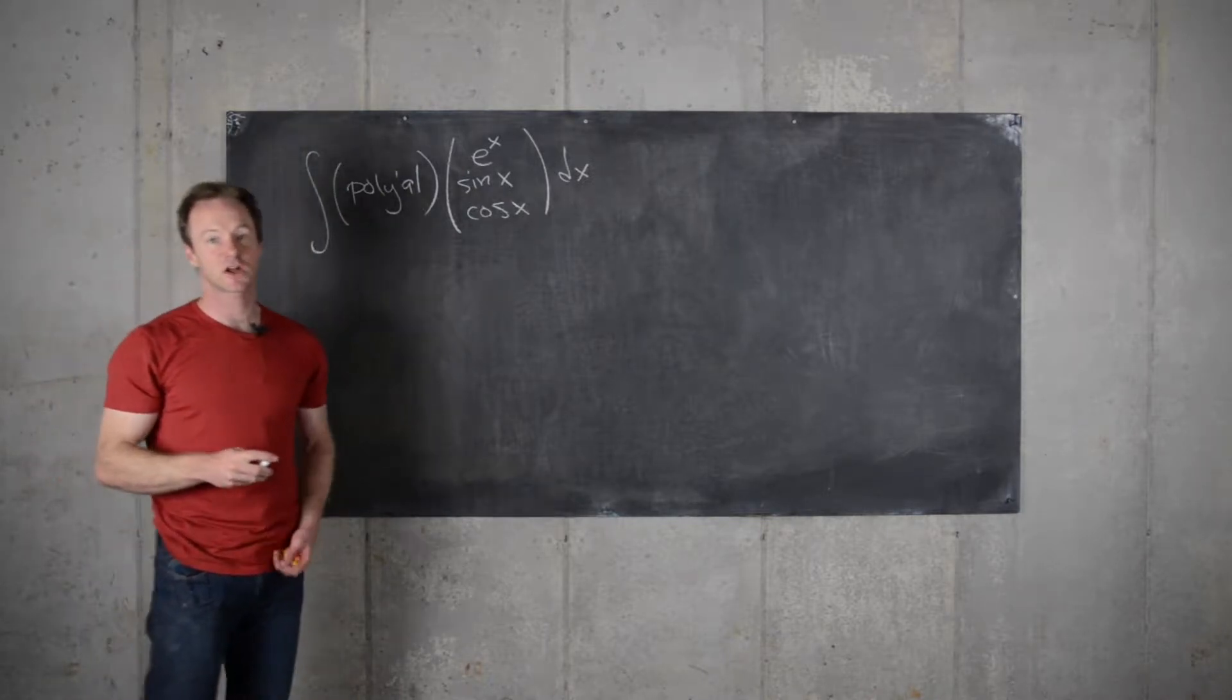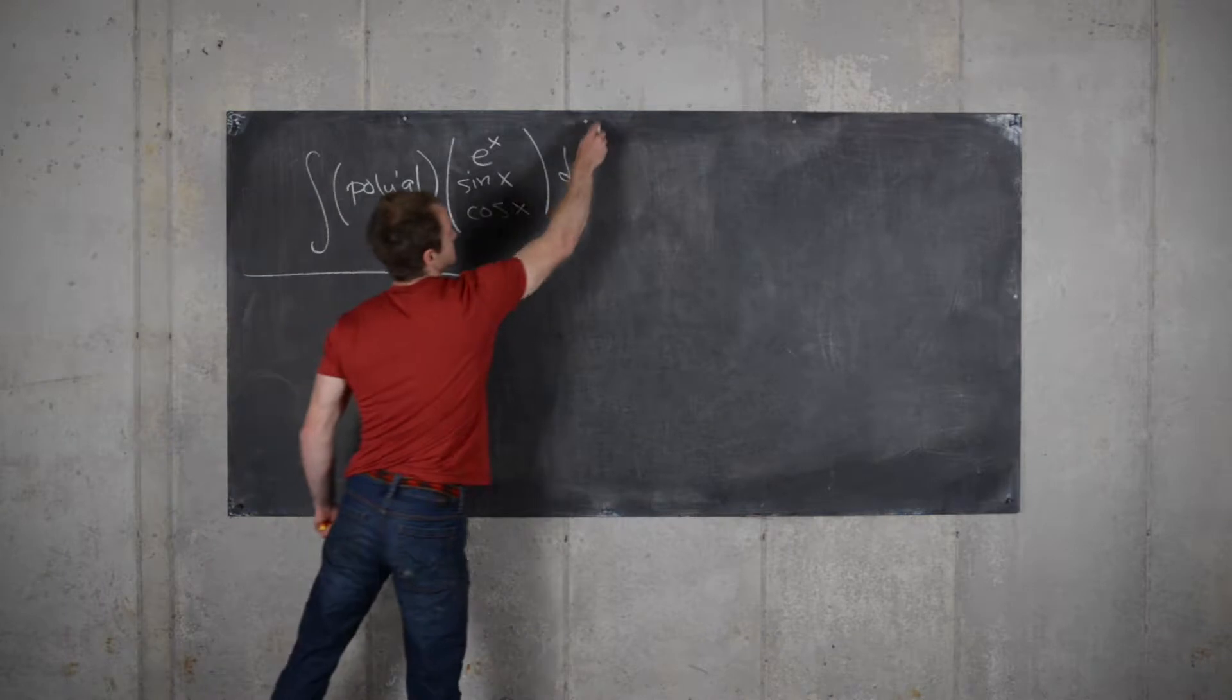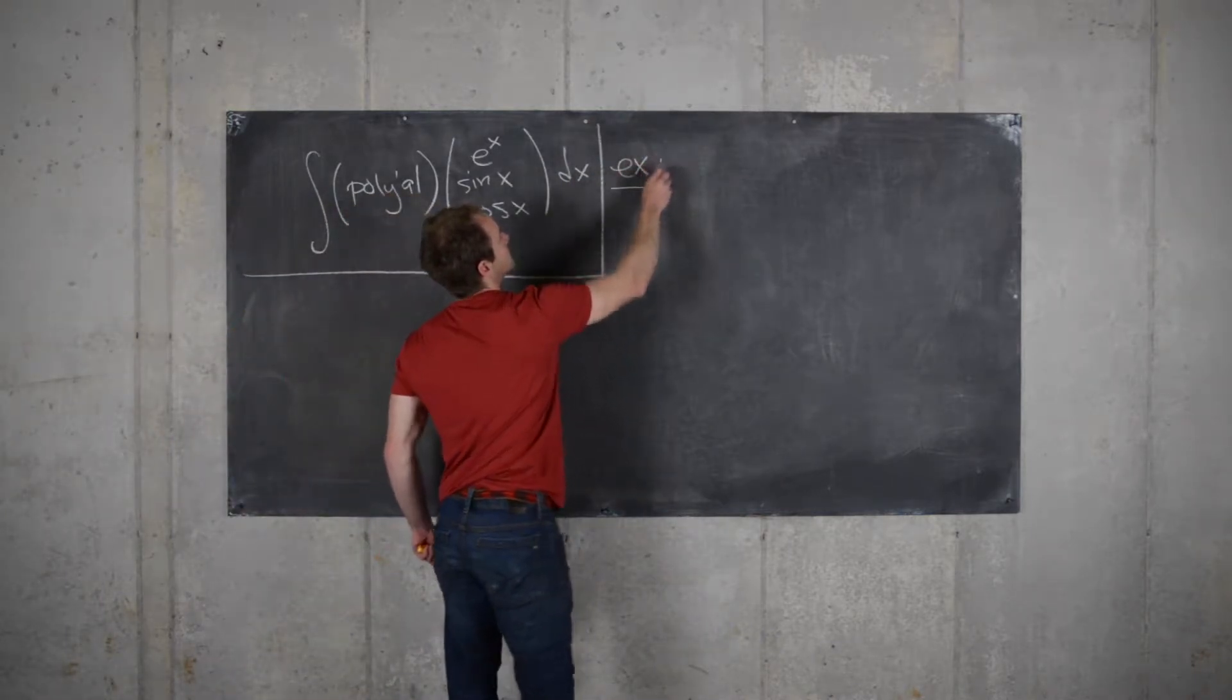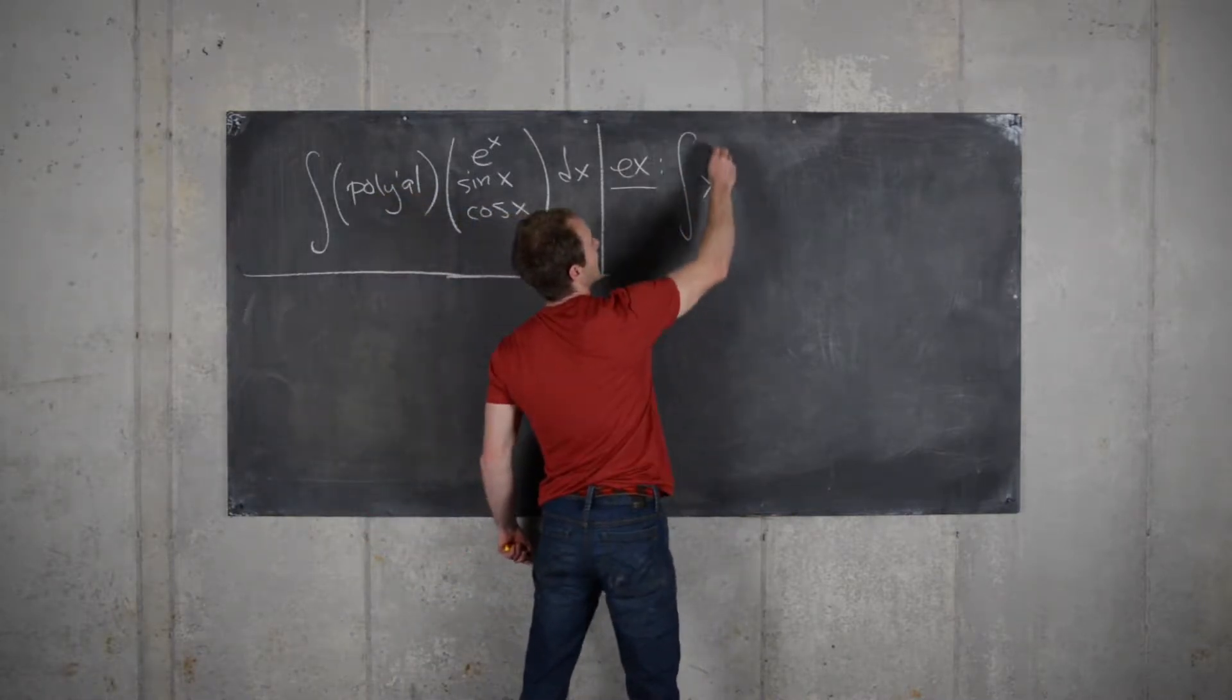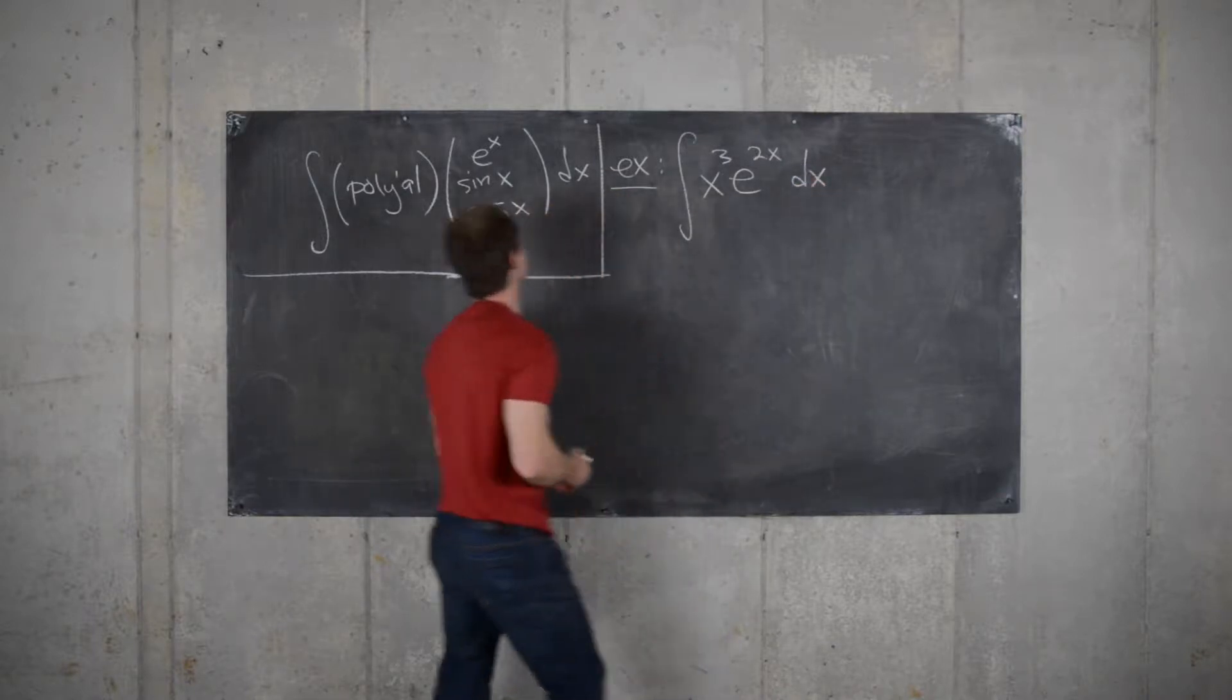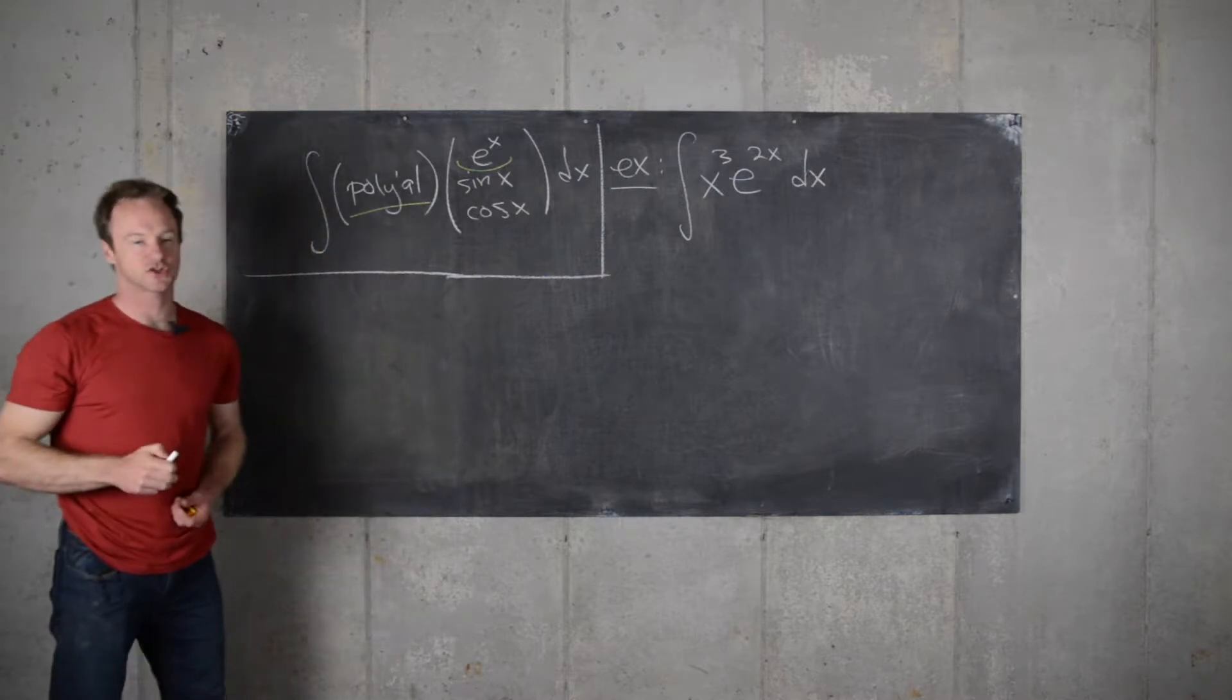And it's really just a shortcut for doing integration by parts. Let's see an example. Let's say we want to integrate x cubed e to the 2x. So that would be a polynomial and then an exponential type function.